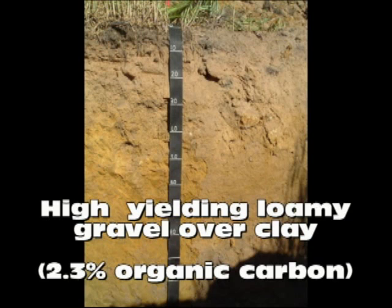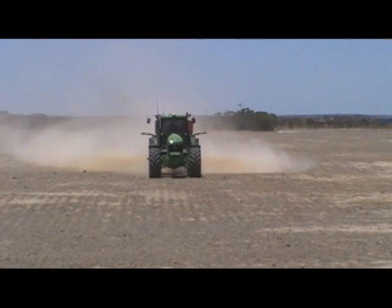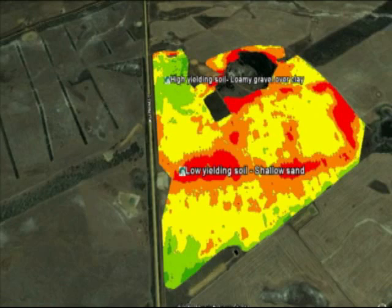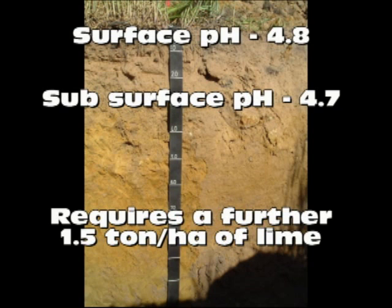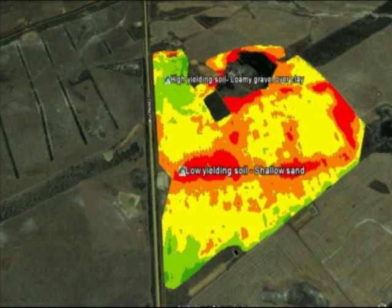In the same paddock, on a duplex loamy gravel over clay with a surface organic carbon of 2.3%, 1.5 tonnes of lime is needed, assuming 70% neutralising value of the lime. The previous blanket application was not enough on the loamy gravel, which is still below the target surface pH of 5.5. This site is currently 4.8 at the surface and 4.7 in the subsurface. The loamy gravel area has a history of much higher yields than the shallow sand.